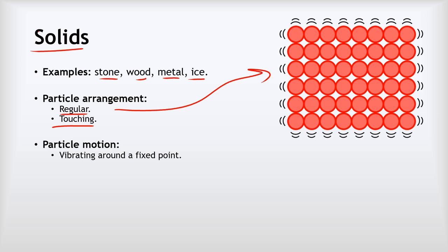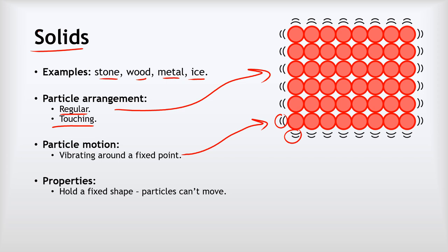In terms of the motion of the particles, the particles are just vibrating around a fixed point — that's what these little vibration lines are trying to show. So they're not moving around; they're just vibrating. This leads to the properties of solids: solids have a fixed shape.